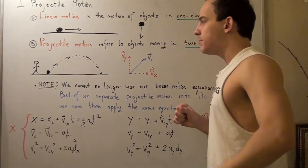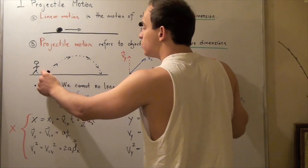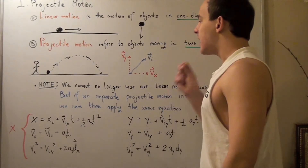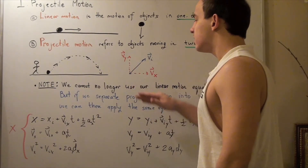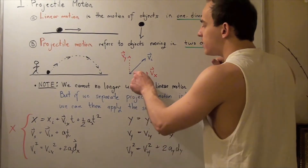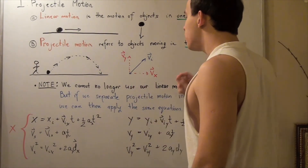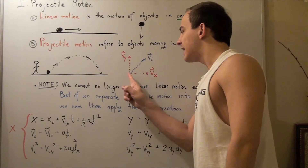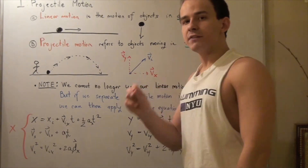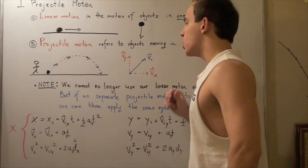That means our velocity vector at the initial position, at time equals zero, will point at some angle with our ground, with our x-axis, where this is our angle theta. Now, note that we can break this vector down into two components, because every vector can be broken down into its two components — a y-component as well as an x-component.